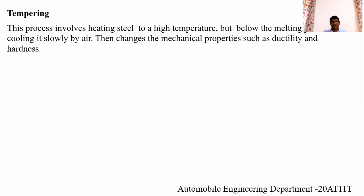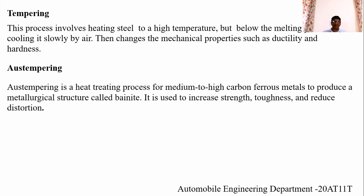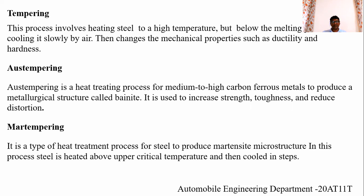Tempering: the steel is heated to a high temperature below the melting point and cooled by air, changing mechanical properties such as ductility and hardness. Austempering is a heat treatment process for medium to high carbon ferrous metal to produce a metallurgical structure called bainite, used to increase strength and toughness and reduce distortion. Martempering is a heat treatment process for steel to produce a martensite microstructure, where the steel is heated above the critical temperature and then cooled gradually.